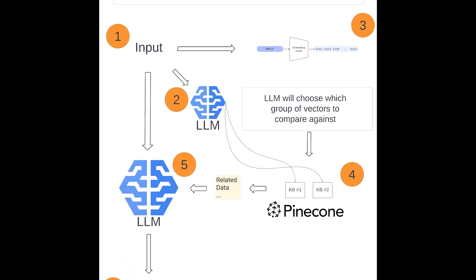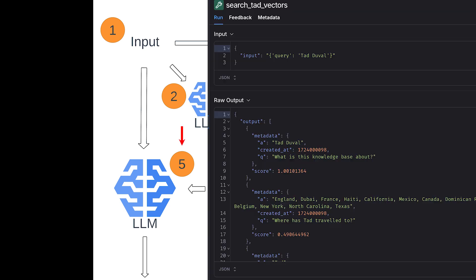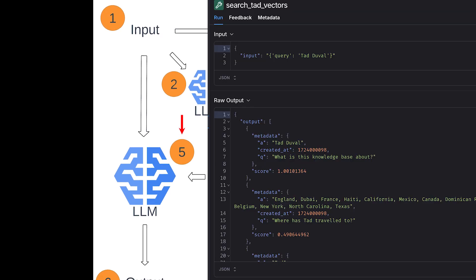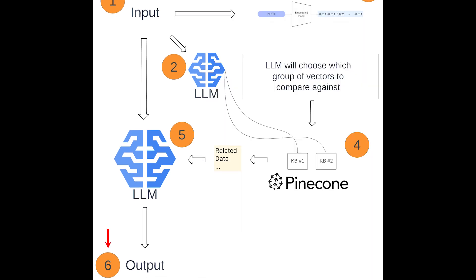Let's walk through what's happening here. One, we send a prompt to our agent. Two, the LLM powering our agent decides if this prompt is related to any supported knowledge bases — if not, the LLM returns directly; if it is, we continue. Three, we convert our input prompt into a vector. Four, we compare the vector representing our input against vectors in any knowledge bases the LLM has decided are relevant, and retrieve the original data from the highest matching vectors. Five, we combine all retrieved data with the original prompt and send that to our LLM. Six, we receive the final output from the LLM and return it to the user.